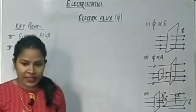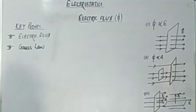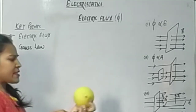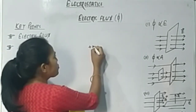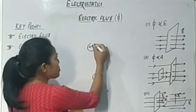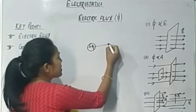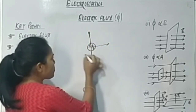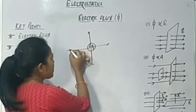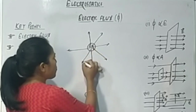To understand electric flux, suppose I am having this ball. If we consider it in 2D, and suppose we have a plus charge, then what will be its electric field lines? They will be radially outward. The electric field lines will be radially outward.